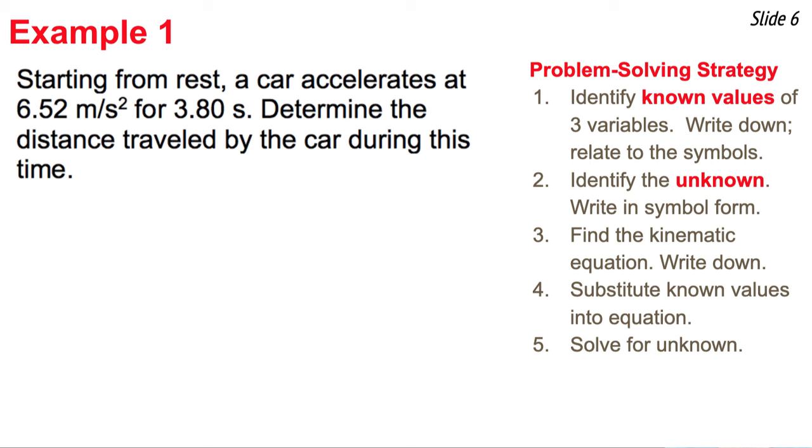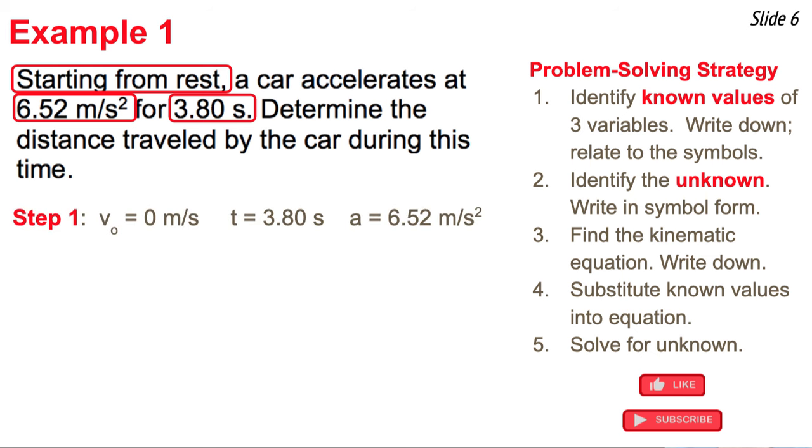Here's the first of three examples. You see the problem solving strategy listed on the right hand side of the slide. I'm going to use that strategy as I solve here for the unknown variable. It says starting from rest. That's an important little clue. A car accelerates at 6.52 meters per second squared for 3.80 seconds. There's three known values here. One of them is rather subtle. Starting from rest indicates to me that the original velocity was 0 meters per second. I notice that the acceleration is 6.52 meters per second squared and the time is 3.80 seconds.